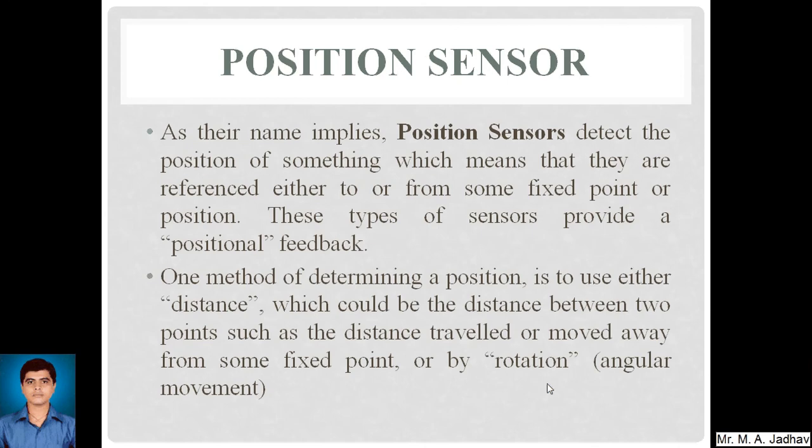So what is a position sensor? As the name implies, position sensors detect the position of something, which means they are referenced either to or from some fixed point or position. These types of sensors provide positional feedback. In many industrial applications we need to detect the position of an object from a workstation, and these sensors will sense whether that object or job has arrived at the workstation or not.